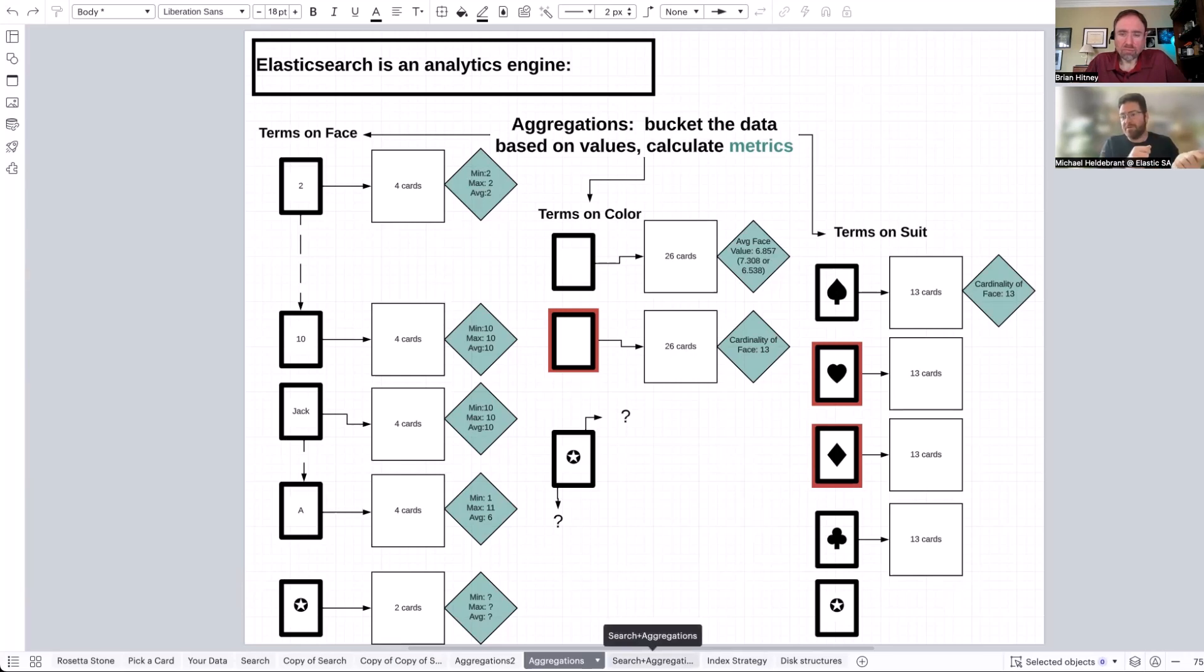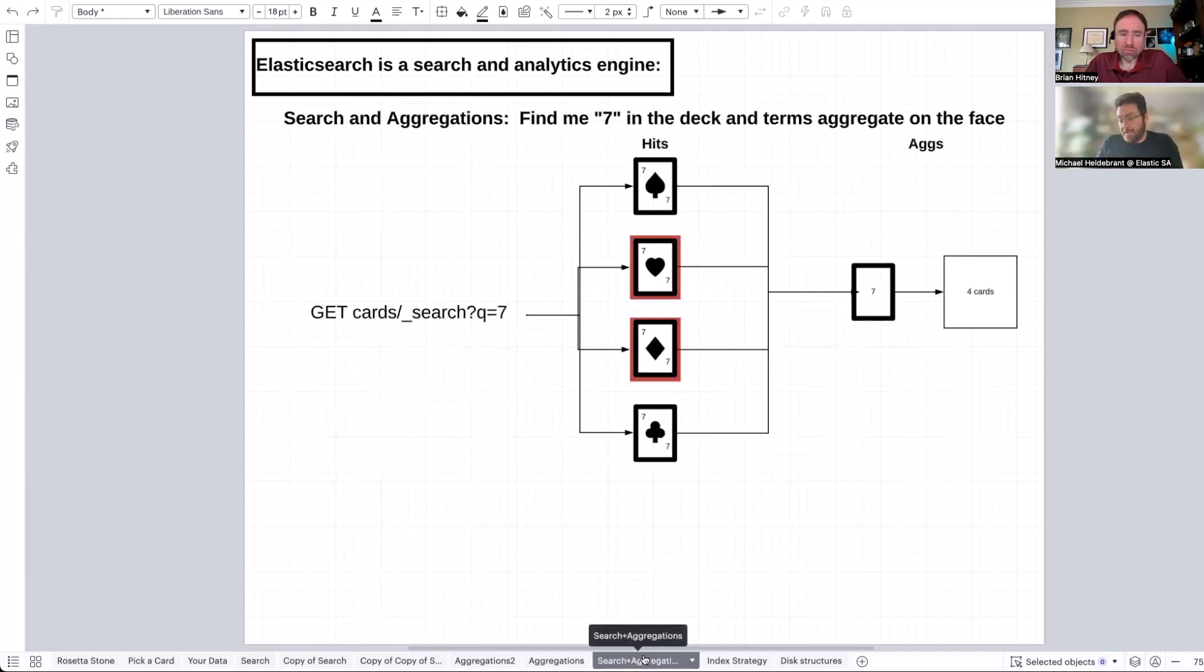Now, it wouldn't be very interesting if we could only search your data or only do analytics on all of your data. The real power of Elasticsearch is that we combine search and analytics. So the ability to have this massive mountain of data, the ability to look at just what you want to know about, and then be able to do large scale analytics on it at speed and scale. In our example, if you wanted to look for the sevens and then do an aggregation and put those four cards in a bucket together, a little bit of a simple thing to do with the deck of cards, but it becomes very powerful when you're thinking about millions of logs, searching for a particular keyword. Now you've got a subset of all the logs, and you might want to know the breakdown of what servers they came from.